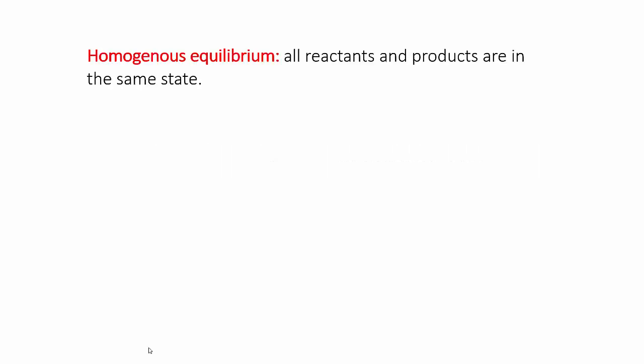A chemical equilibrium is said to be homogeneous if all the reactants and products are in the same state. For instance, the reaction between nitrogen gas and hydrogen gas to give ammonia gas is homogeneous, because all three chemical species involved are gases.